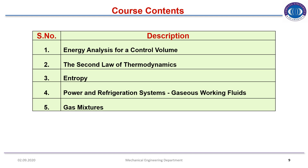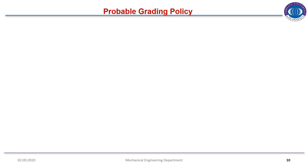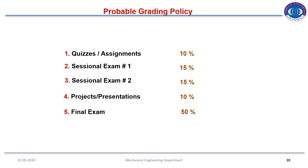The course content includes energy analysis of control volume (open system), the second law of thermodynamics, entropy, power and refrigeration systems with gaseous working fluid, and gas mixtures. Probable grading policy: quizzes and assignments 10%, sessional exam 1 is 15%, sessional exam 2 is 15%, and projects.